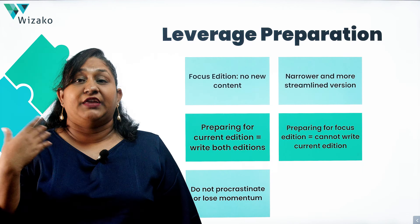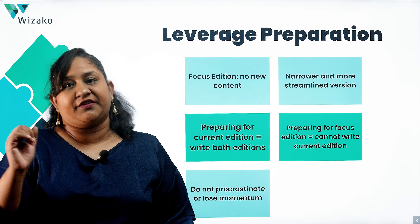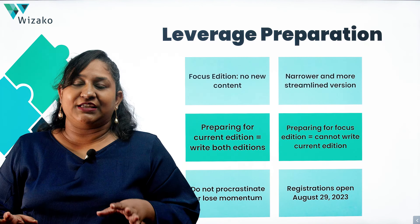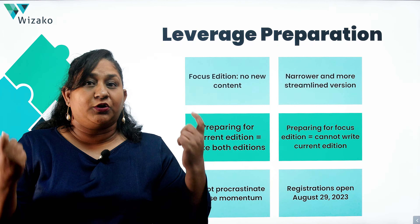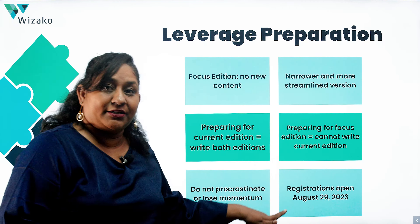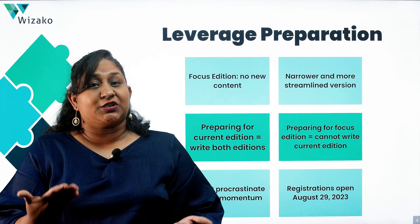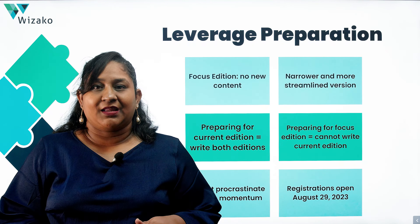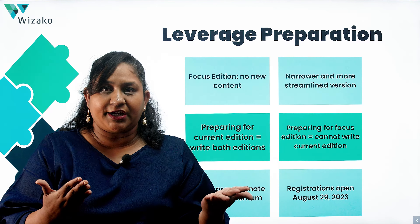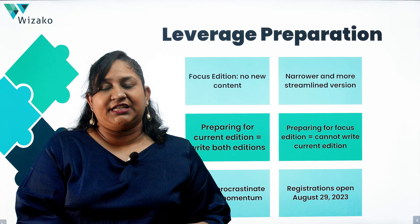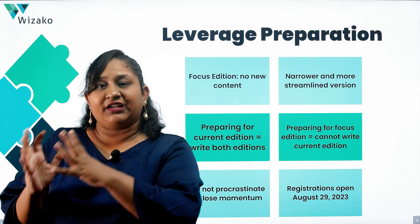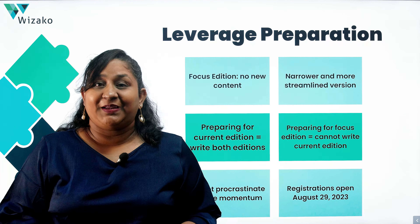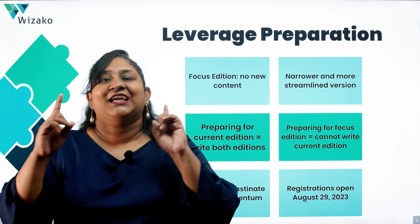If you play the waiting game and for some reason end up having to write the current edition before it's removed, you'll be rushing through a lot of content in very little time. Keep that in mind. Registrations for the Focus Edition open only on August 29th, so the exact launch date won't be known until then — that's about two to two and a half months away. Don't waste that time. Prepare the content common to both editions, and in the last two to three weeks, streamline for whichever edition you decide on.